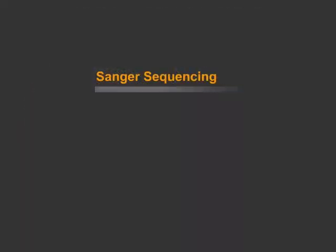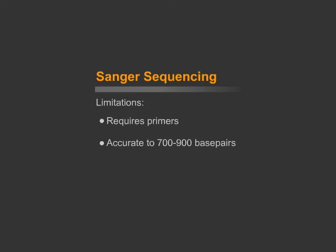However, there are several limitations to Sanger sequencing. It requires specific primers, is accurate only to a certain number of base pairs, and can only determine one sequence with no variations at one time.